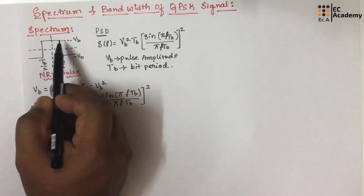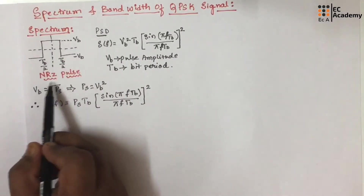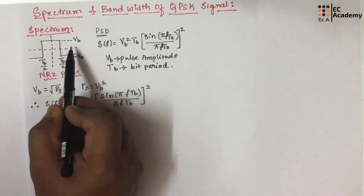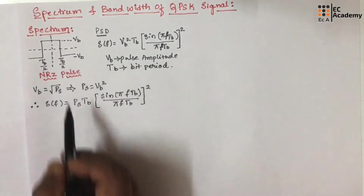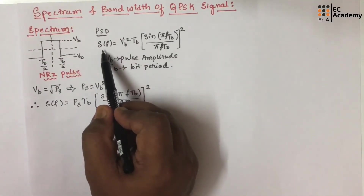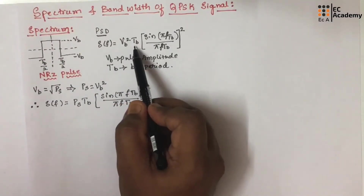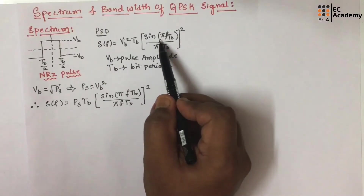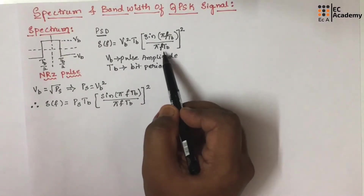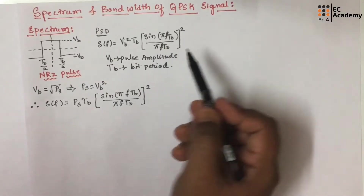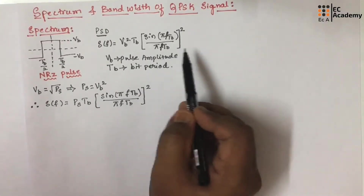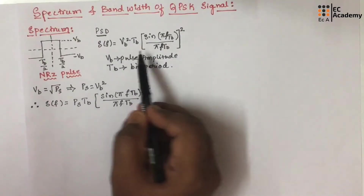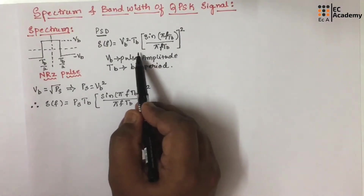To understand the power spectral density of QPSK signal, we need to consider the NRZ pulse with amplitude VB and bit period TB. The power spectral density of NRZ pulse can be written as S(f) = VB² · TB · [sin(πfTB) / (πfTB)]². This derivation we have already done when we understood the power spectral density of BPSK signal. You can go through that video and derive this expression. In this derivation, we are directly taking this equation.